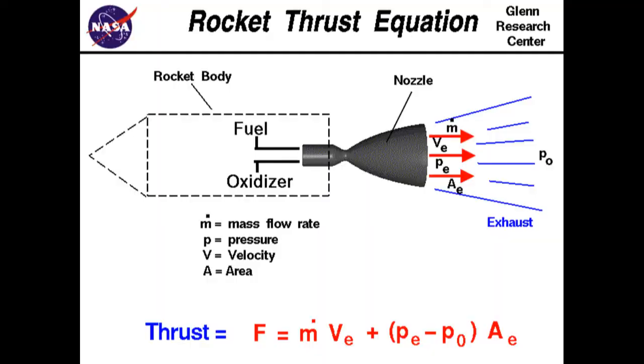The general rocket equation shows that the total thrust of a rocket has two parts. One, the momentum thrust, which is the product of the propellant mass flow rate and the exhaust velocity, relative to the rocket, of course.